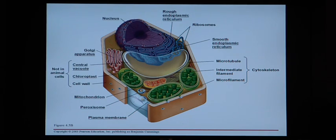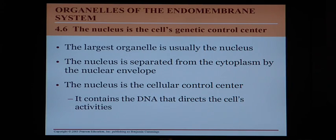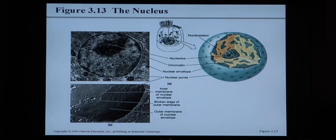We've started with the membranes and cytoplasm. Now, the nucleus is the cell's genetic control center — usually the largest organelle in the cell — and it contains the DNA that directs the cell's activities. The nucleus also has its own special membrane around it called the nuclear envelope, or nuclear membrane.